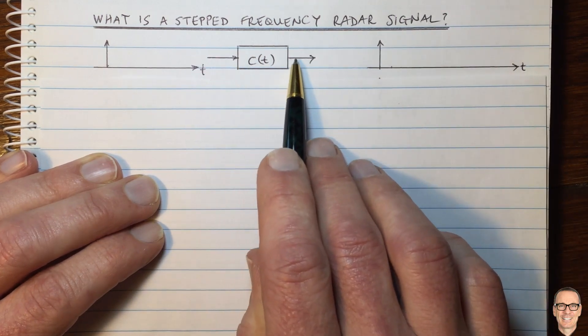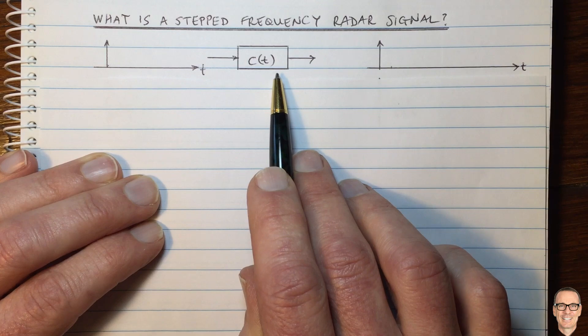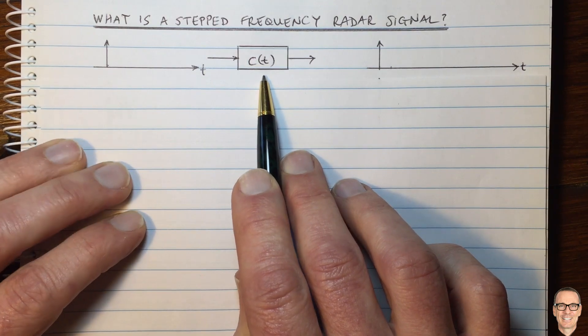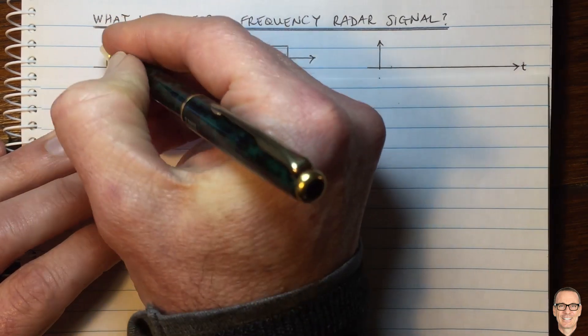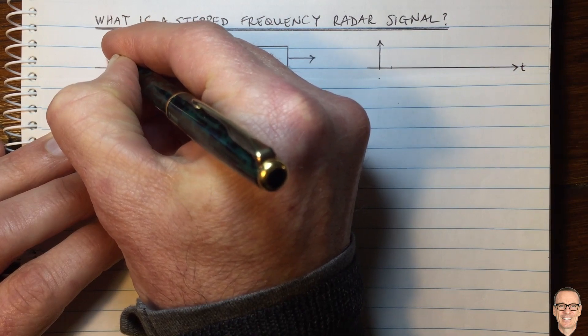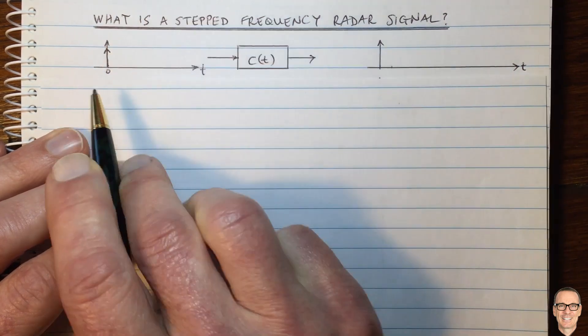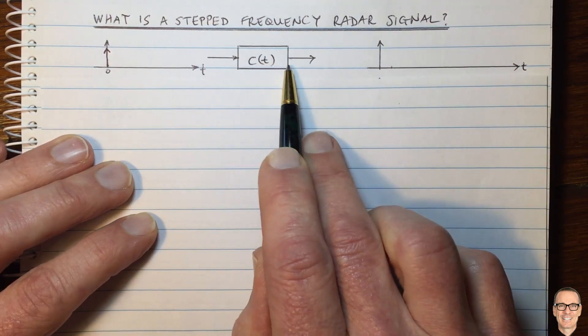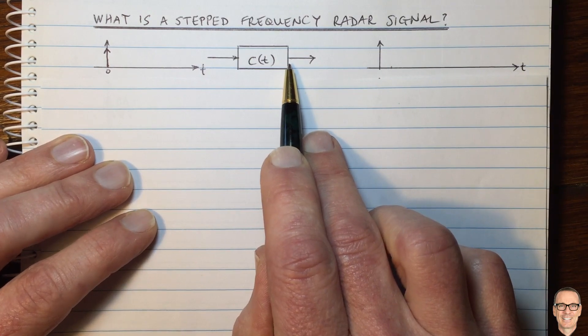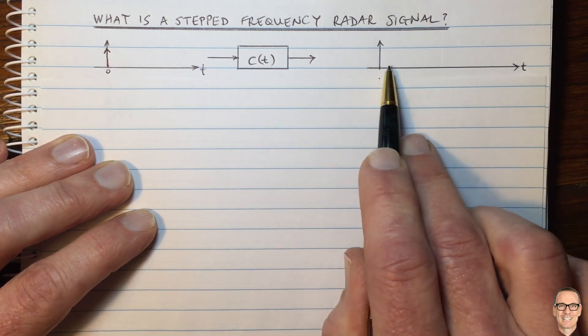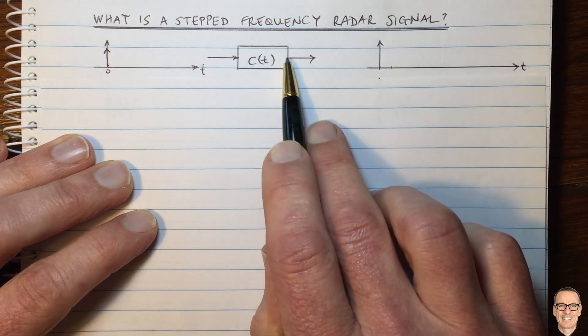We can represent the reflections by a system with an impulse response. So if we were to send an ideal impulse at zero time, then the output, which we would be receiving from all of our reflections, would be the impulse response of that system.